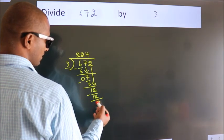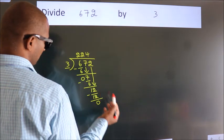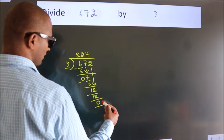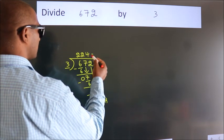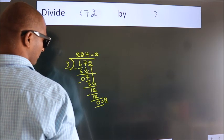After this, no more numbers to bring down. So, we stop here. This is the remainder. This is the quotient: 224.